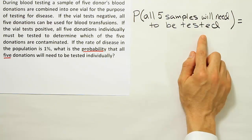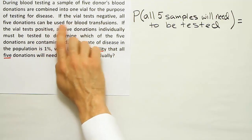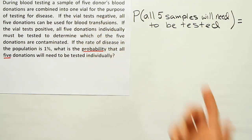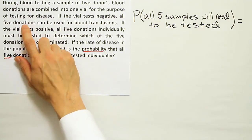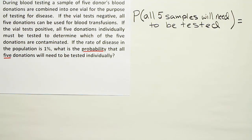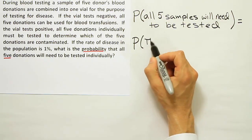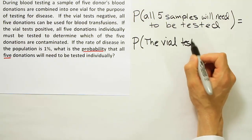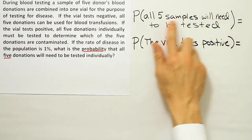What they mean by 'all five will need to be tested' is this: the blood bank puts five individual donations into one vial and tests that vial. If the vial turns out negative, it means all five blood samples in the group are clean and healthy. If the vial comes back positive, they have to test every single individual donation that went in there. So 'all five will need to be tested' is really the same as saying the probability that the vial tests positive. If the vial tests positive, then I would have to test all five individual samples.